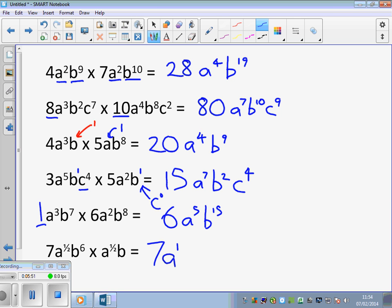B to the power of 6 multiplied by B gives us B to the power of 7. Traditionally, we don't write A to the 1, so we just call it A. And the answer is 7A, B to the 7.